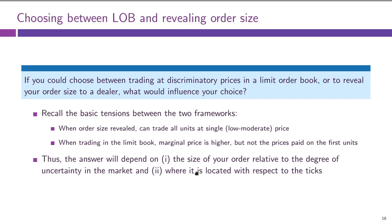The rule of thumb: trade small orders with a dealer, because you can credibly signal you don't have strong private information. With a dealer, revealing a very large order signals strong private information, so the dealer gives you an unfavorable price. In an order-driven market, you can exploit the limited conditioning information available to limit traders, getting a better average price for large orders. A secondary concern: large tick sizes in a limit order book extract more profit from market traders, making the limit order book relatively less appealing compared to a dealer who can quote any price.